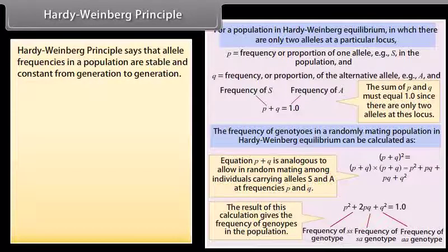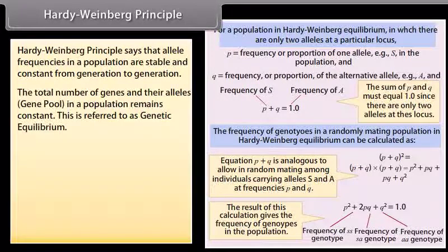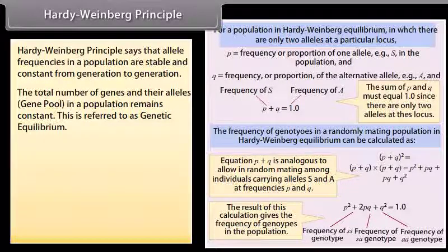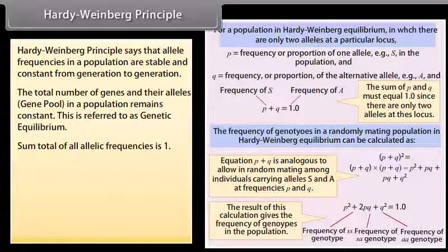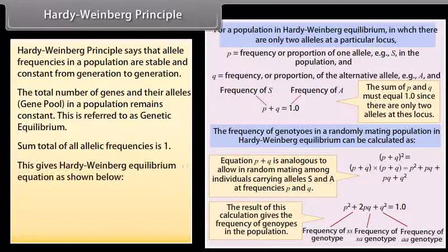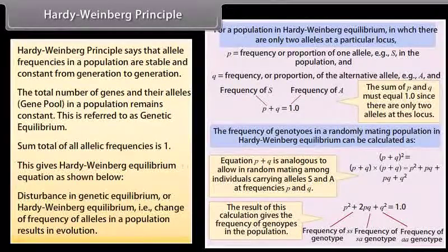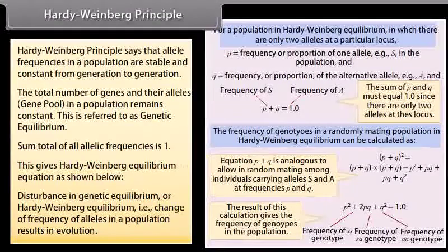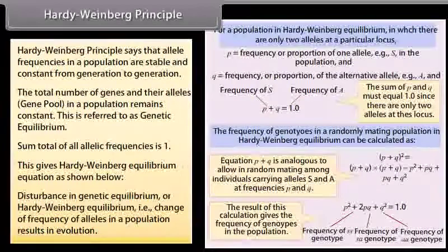Hardy-Weinberg Principle states that allele frequencies in a population are stable and constant from generation to generation. The total number of genes and their alleles — the gene pool — in a population remains constant, referred to as genetic equilibrium. The sum total of all allelic frequencies is 1. Disturbance in genetic equilibrium, i.e., change of frequency of alleles in a population, results in evolution.